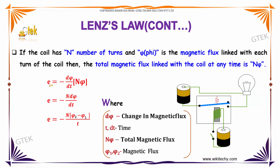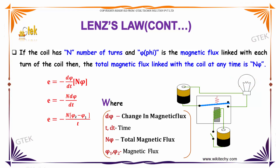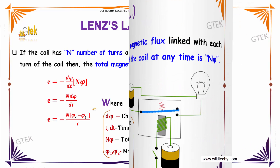So, the induced EMF e is equal to minus of d(psi) by dt into n into psi. The minus sign indicates it's in the opposite direction. So, the induced EMF e is equal to minus n into d(psi) divided by dt.